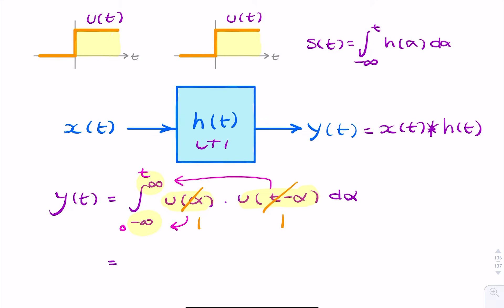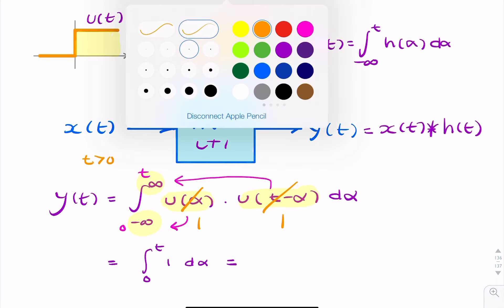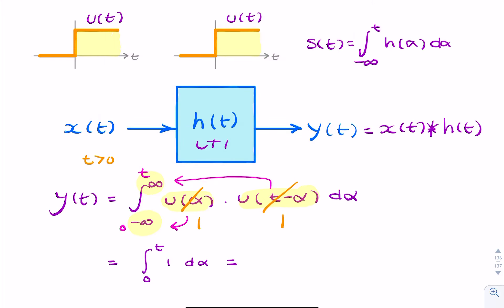So the integral now becomes the integral from 0 to T of 1 d alpha. This is on the condition that T has to be greater than 0, because if T was less than 0, then there would be no integral. So this has to be greater than this. So if we carry on the integration, the integral of 1 d alpha is simply alpha, and that just gives you T.